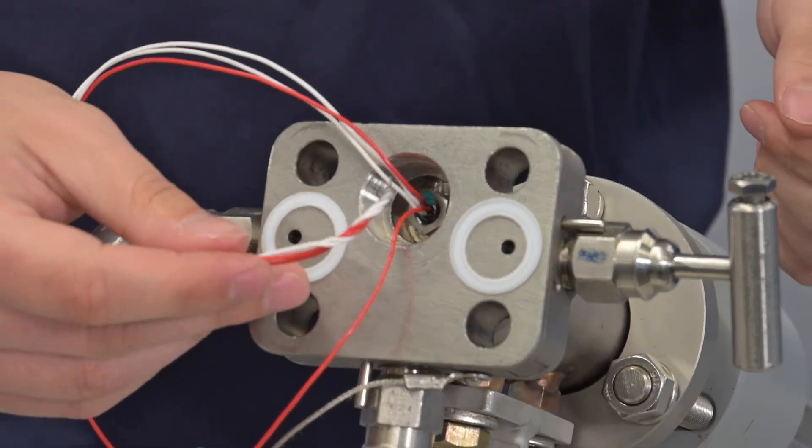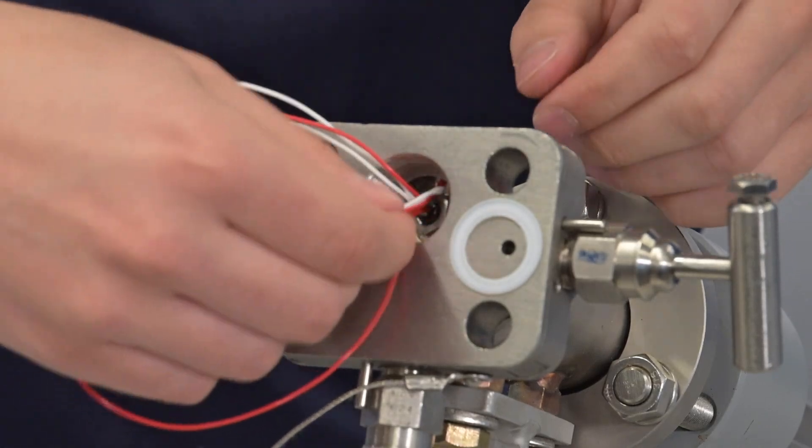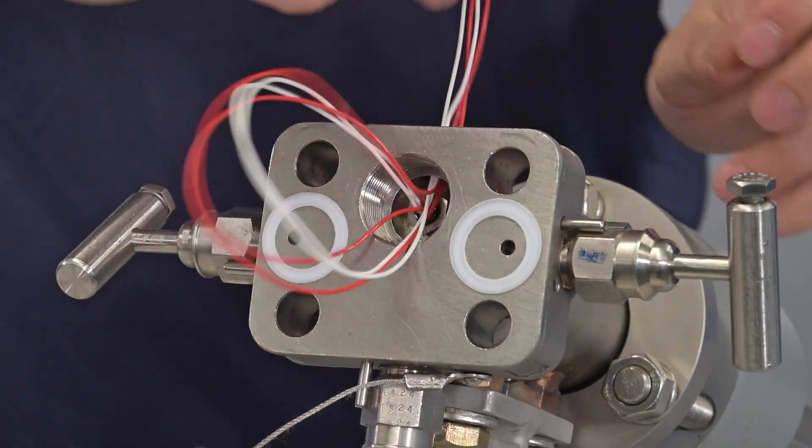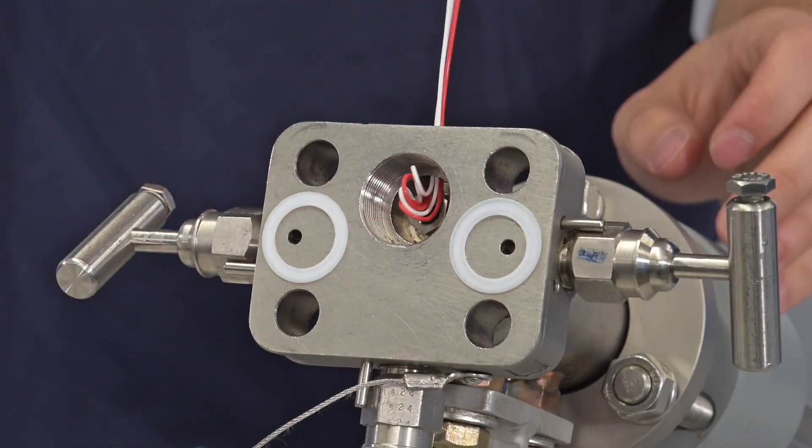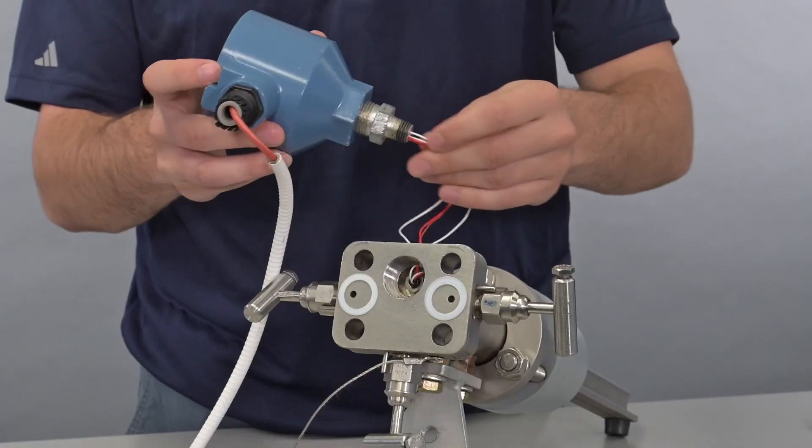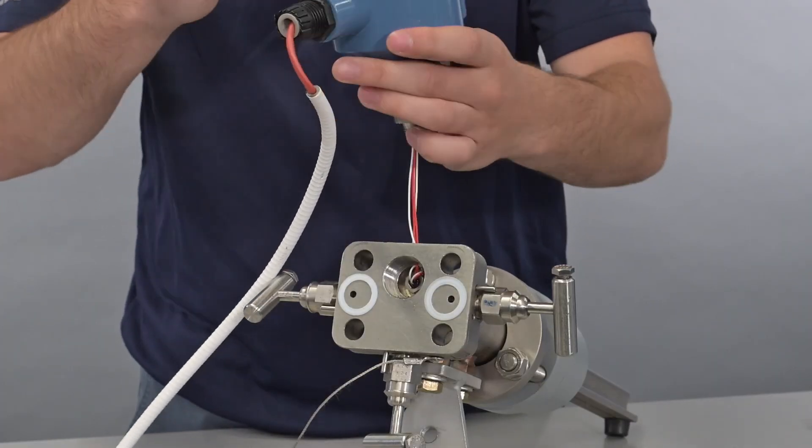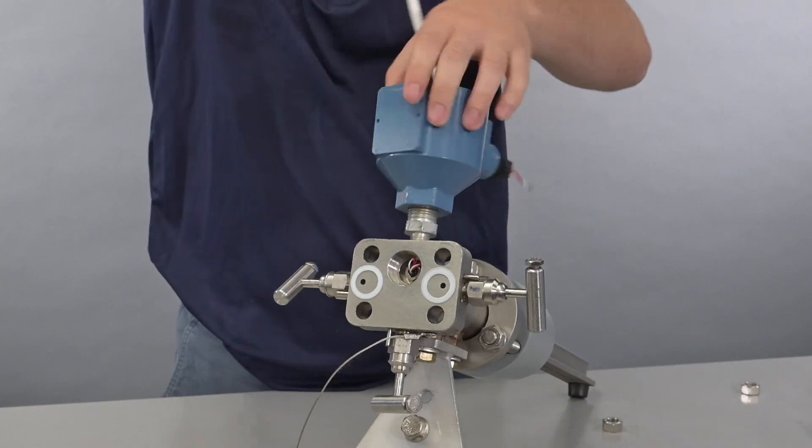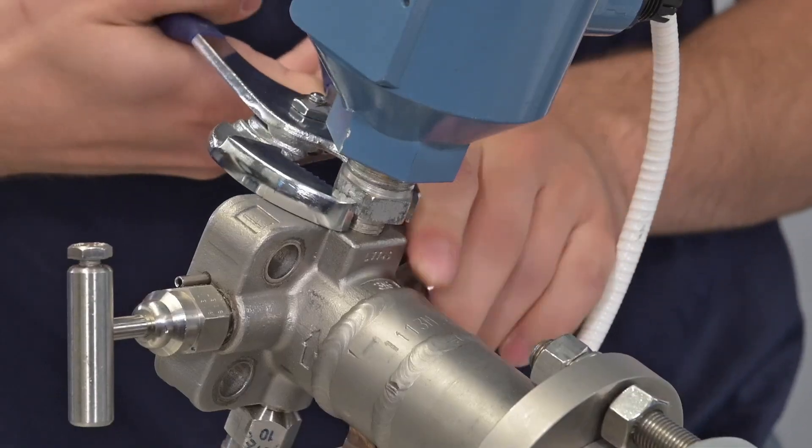Thread the wires through the opening on the connection head and pull through from the terminal block side. Reattach the RTD connection head to the manifold using your hands first and then tighten with a wrench.